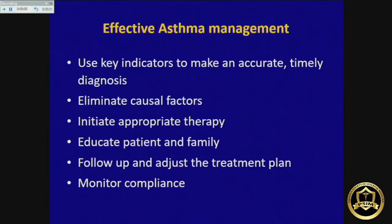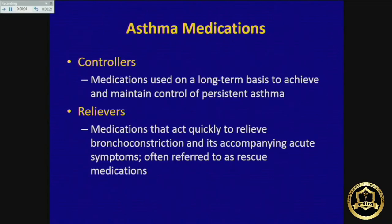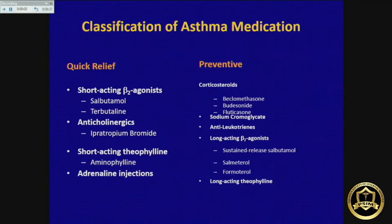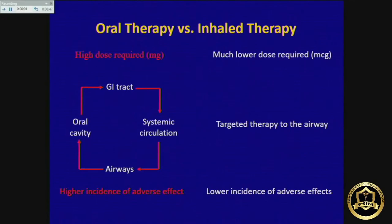Management involves very simple steps: first make a diagnosis, then eliminate causal factors aggravating asthma, initiate therapy, focus on education — which is the main issue in any chronic illness — and finally monitor compliance. Treatment uses two types of drugs: reliever drugs, which are bronchodilators that immediately relieve breathlessness, and controller drugs, which reduce the underlying inflammation. Both are available in Pakistan.